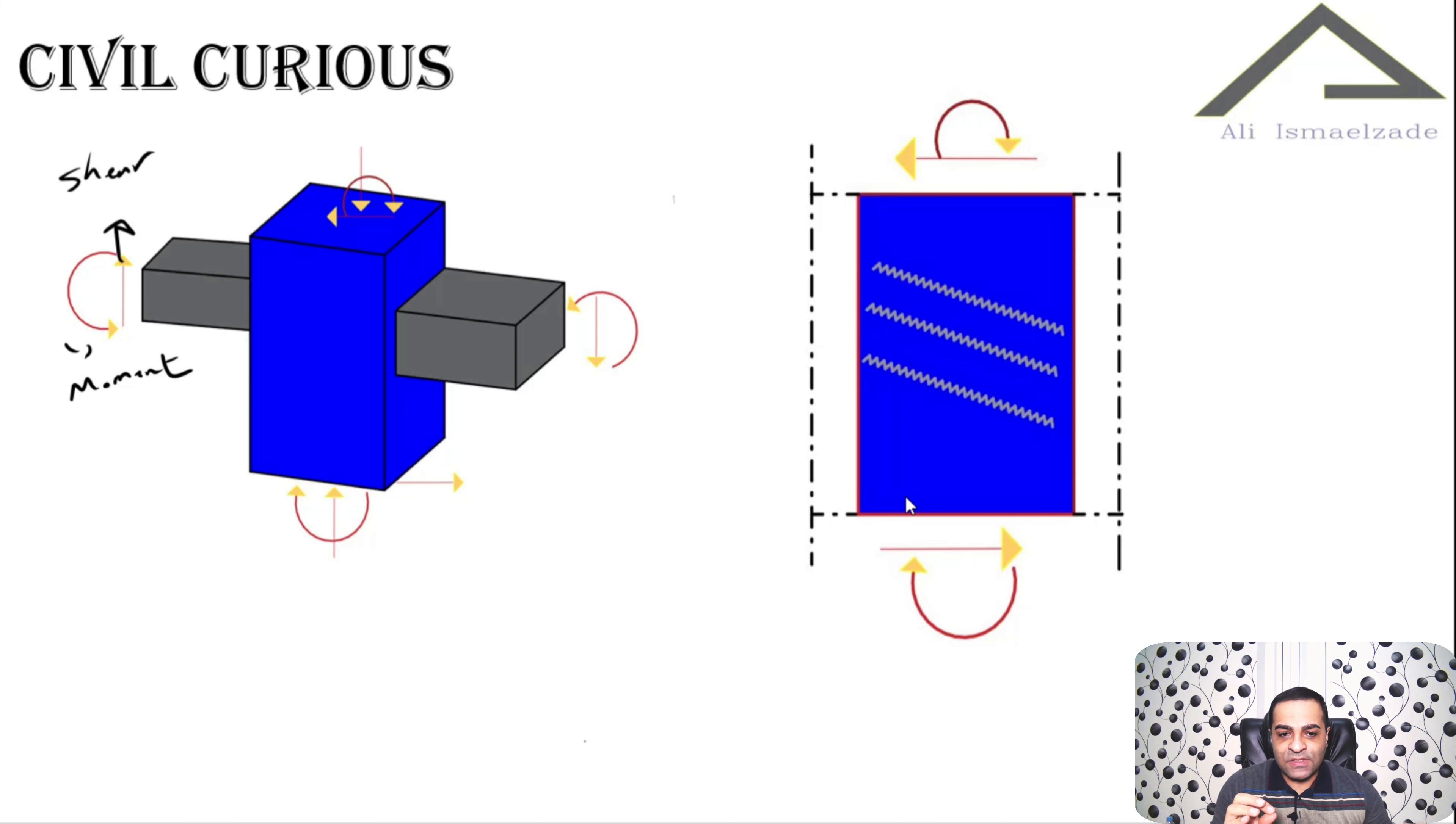Because of these forces, we have diagonal cracks in this area, as you can see in this picture. These are cracks. So I told you that because of these loads and to prevent the progress of these cracks...